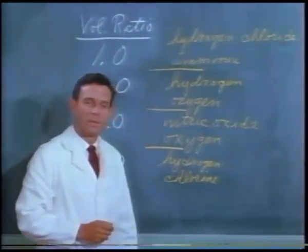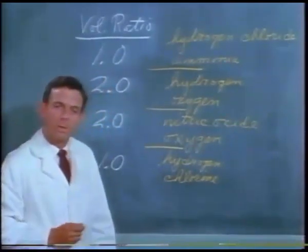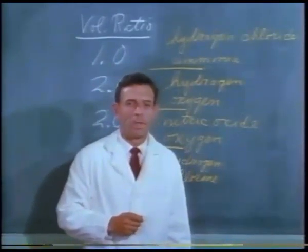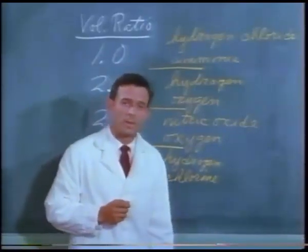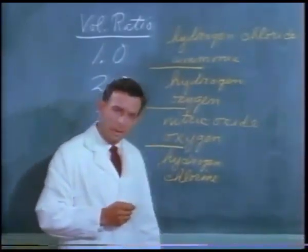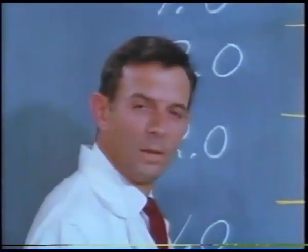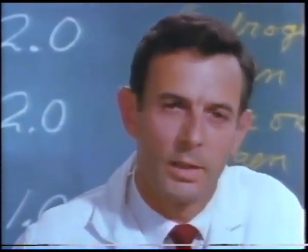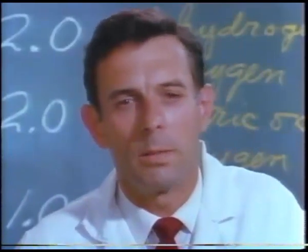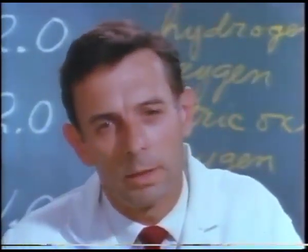In every example we've studied, the volumes of two gases that combine are in a simple integer ratio. These ratios show regularity — now let's seek explanations. Different gases have different properties; the molecules of one gas must differ somehow from the molecules of another gas. We discovered there's a simple integer relationship between the volumes of two gases that combine. A simple explanation of such relationships was first proposed a century and a half ago by an Italian scientist, Amadeo Avogadro. If you wish to discuss at this time what these new facts add to our particle model of a gas, the projector may be turned off now. Then, later, you can compare your ideas with those of Avogadro.